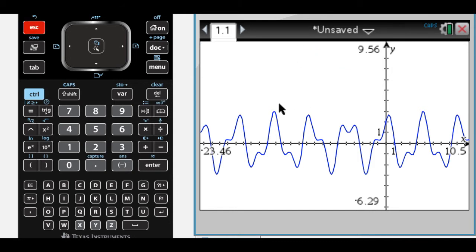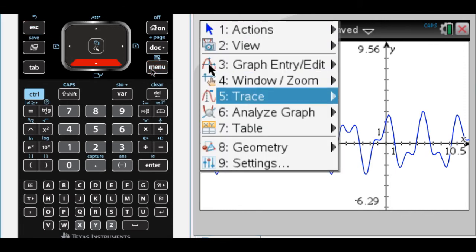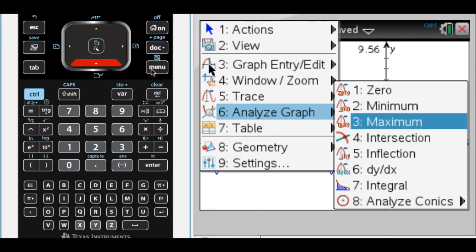So I see this weird looking thing, and it appears to be showing up twice. I think the period is from this maximum to this maximum. So to do that, press menu, analyze graph, and get the maximum.